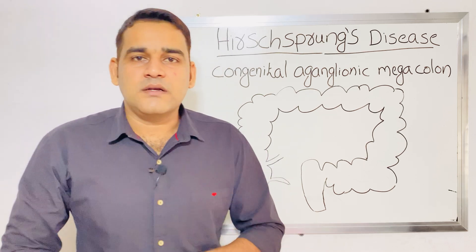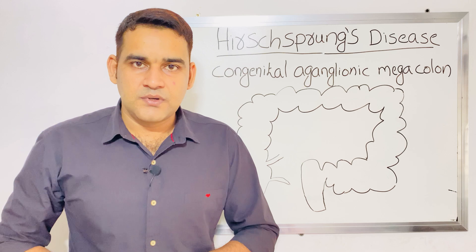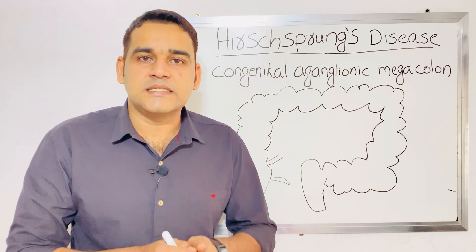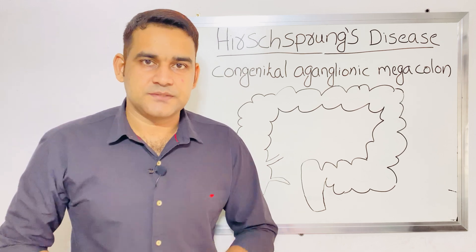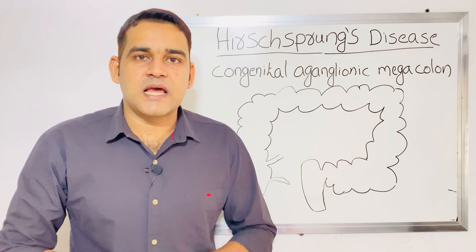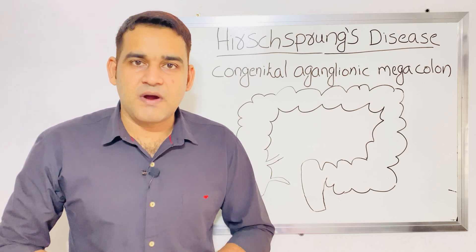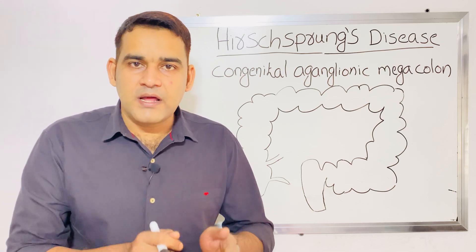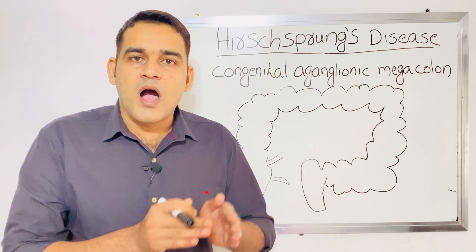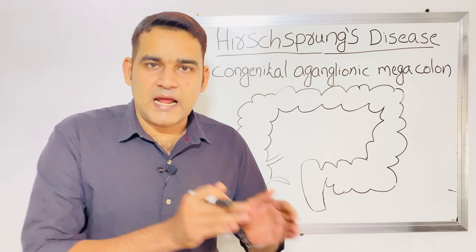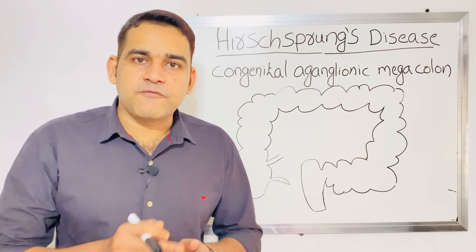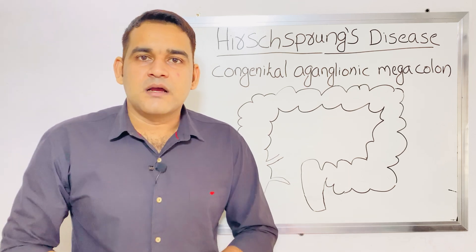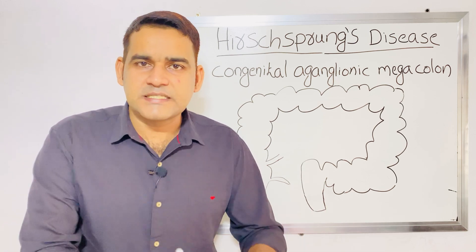Usually ganglion cells are present in the rectum. For some children, by birth, ganglion cells in the rectum will be absent. These ganglion cells help for peristaltic movement — a wave-like movement which helps move food and fluids from one part to another part of the digestive tract. For the rectum, ganglion cells are responsible for peristaltic movement.